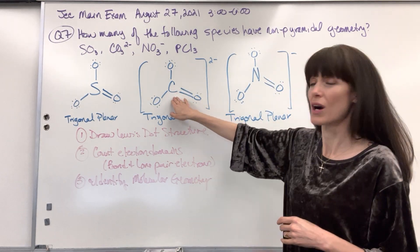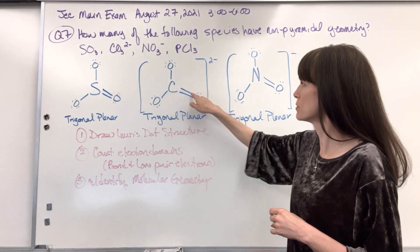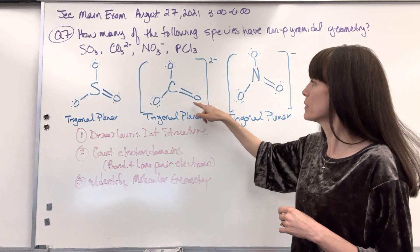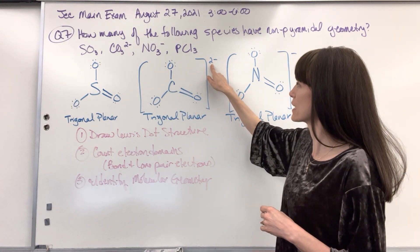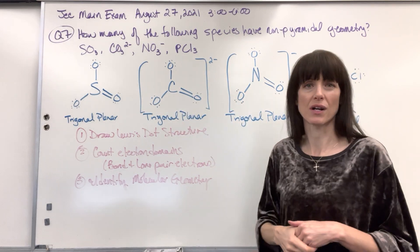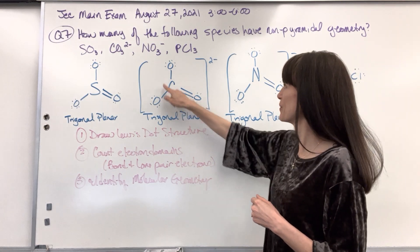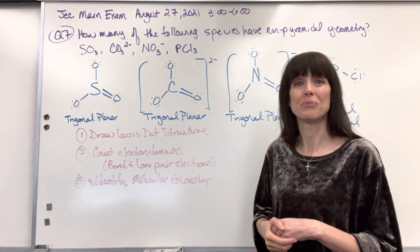Here we have our carbonate ion. So this carbon is going to share two electrons. It's a double bond, sharing two electrons from the oxygen. It shares one electron with each of the oxygens, and then the extra electrons attached to those oxygens to fulfill their octets. Let's count electron domains. One, two, three electron domains. Again, that's going to be trigonal planar.